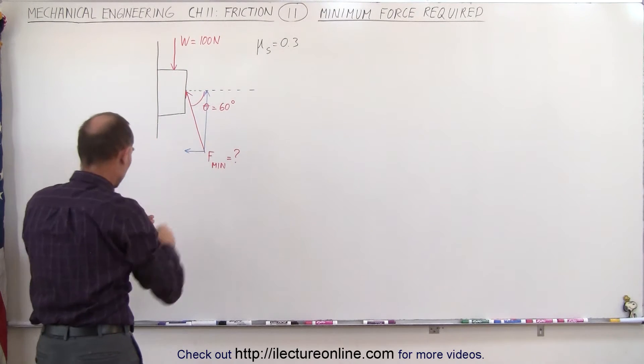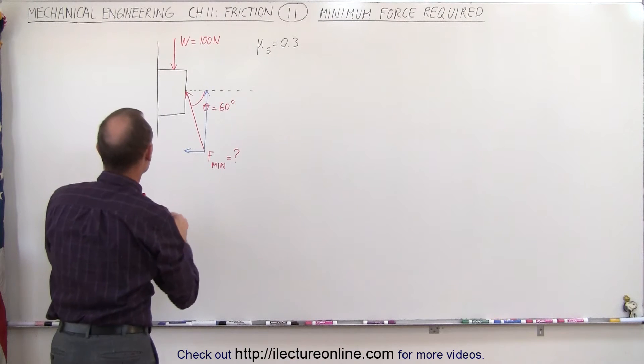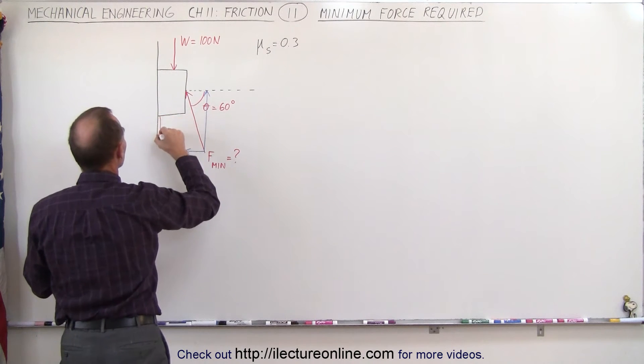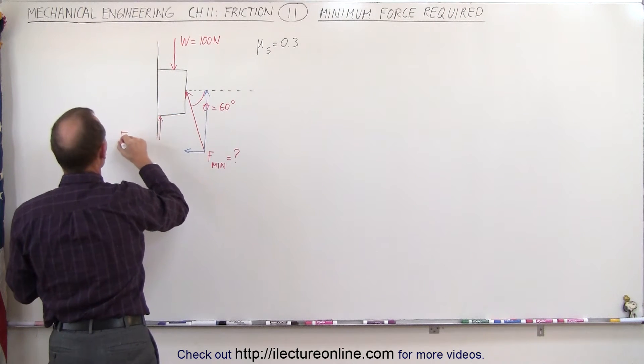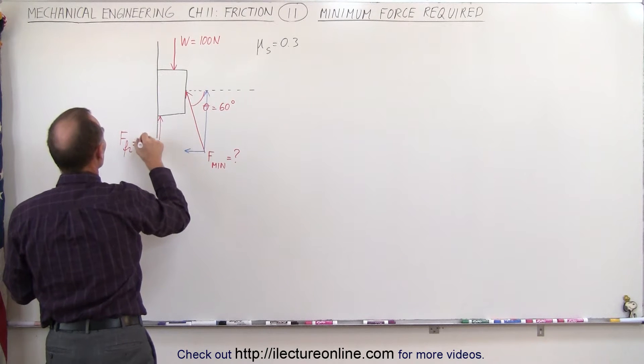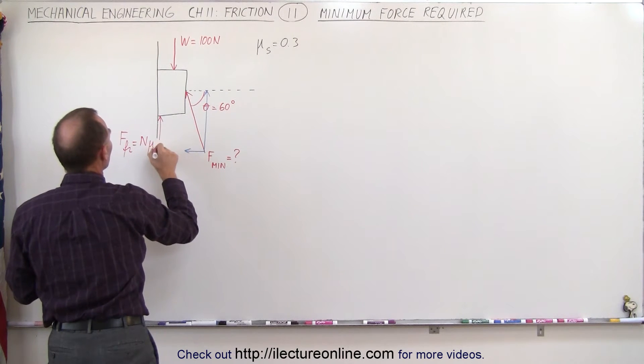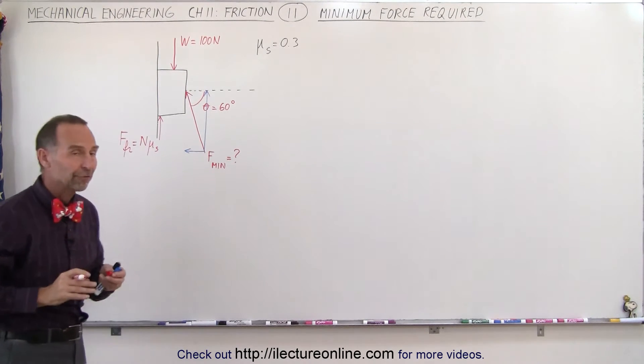...then we know that there's going to be a friction force in the upward direction, and that friction force has to be equal to the normal force times the coefficient of friction. In this case, it's a static coefficient of friction.